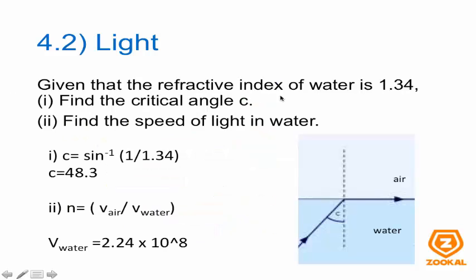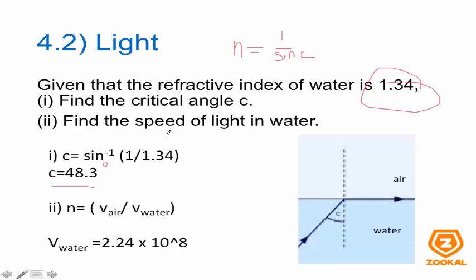Here is a question: given that the refractive index of water is 1.34, find the critical angle c and find the speed of light in water. For this question, you are given n, the refractive index only. The formula to use is n = 1 / sin c. You rearrange the equation to find c, and you get c = 48.3 degrees. To find the speed of light in water, assume the speed of light in air is 3 × 10^8 m/s, the same as that of a vacuum. Using n = speed in vacuum / speed in medium, you rearrange it and get V water.